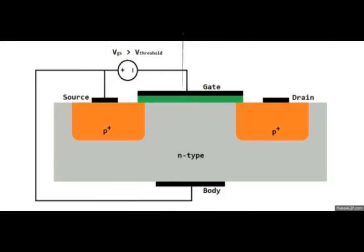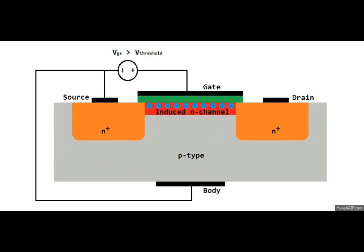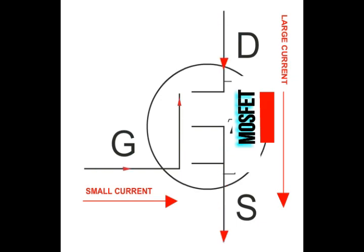Connecting the gate to the voltage source causes the resistance between the drain and the source to decrease drastically and creates a channel for the flow of current from the drain to the base of the source.